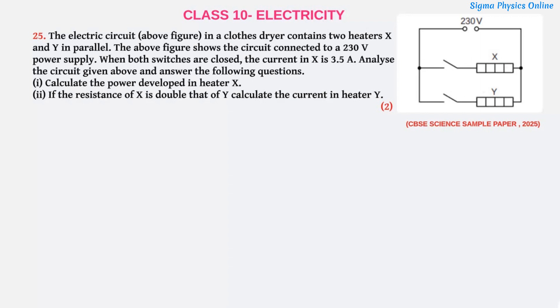So here we have a circuit in which there are two heaters X and Y which are connected in parallel to a source of potential 230V. That means both these heaters are operating at the same voltage because in a parallel circuit the potential difference across the ends of the branch remains the same or is constant. So the supply voltage for both heaters is 230V.